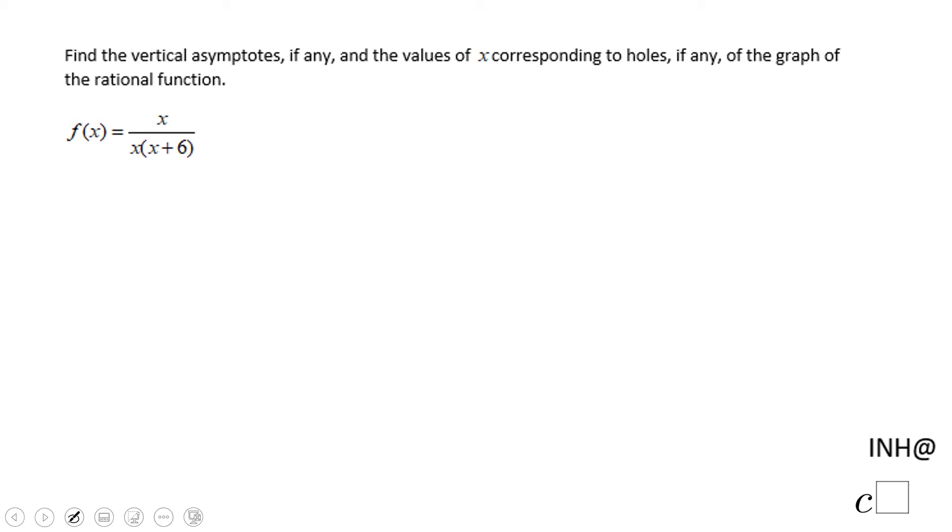Welcome or welcome back to INH@C² (I Need Help at C Squared). In this example, we have a rational function and we need to find the vertical asymptotes, if we have any, or holes if we have any.